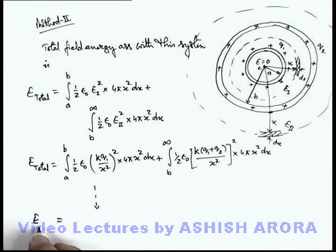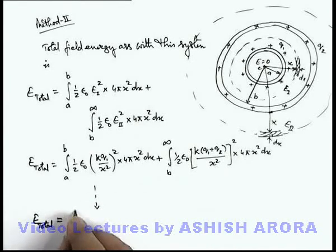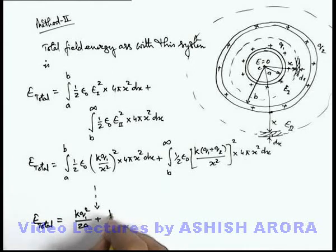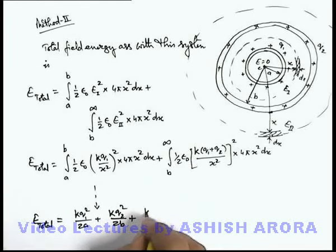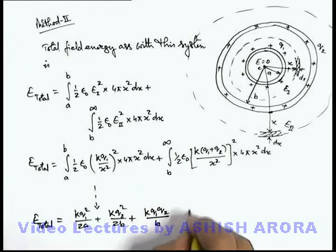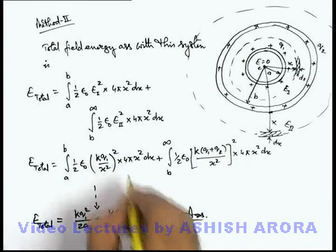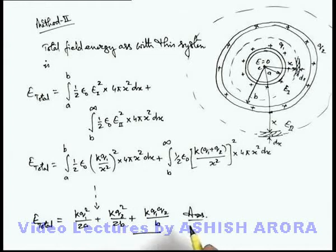After evaluating these integrals, the result will be the same as what we obtained by the direct method: k·q1²/2a + k·q2²/2b + k·q1·q2/b. All students should verify this answer after evaluating the integrals themselves. Be comfortable with both of these methods — when required, you can use either one.